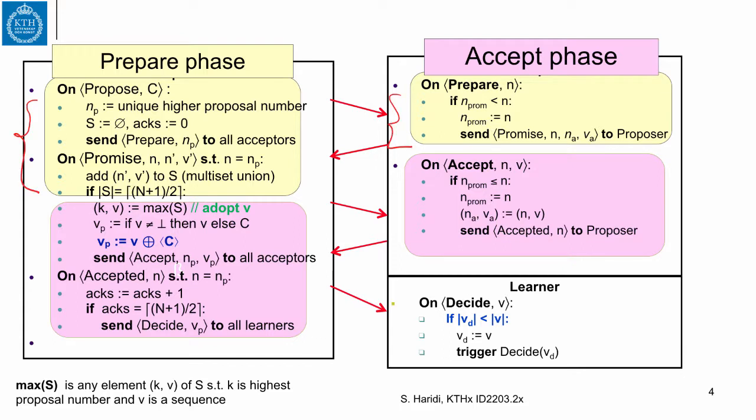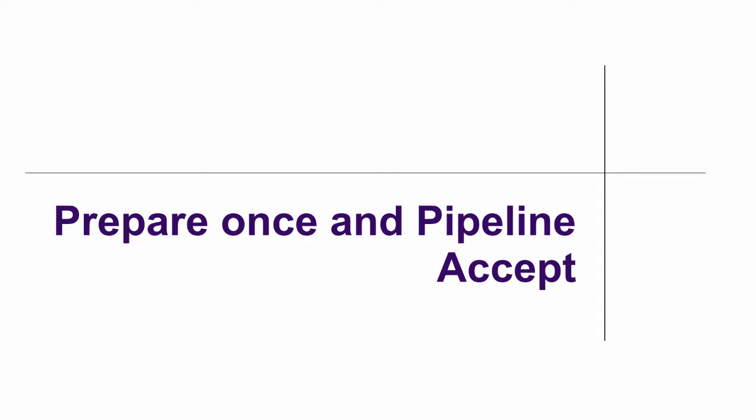The leader will take the sequence and collect promises and sequences from a majority. If accepted by a majority, it will take the sequence at the highest round number, adopt it, and extend it. Then it starts the accept phase, where it extends the current sequence with new proposals. Once it gets a majority of accepts from the acceptors, it can decide. The basic idea is that once a proposer becomes a leader, it does the prepare phase once and then does multiple accepts — first after synchronizing with the acceptors, and subsequent accepts when it gets new commands from clients.